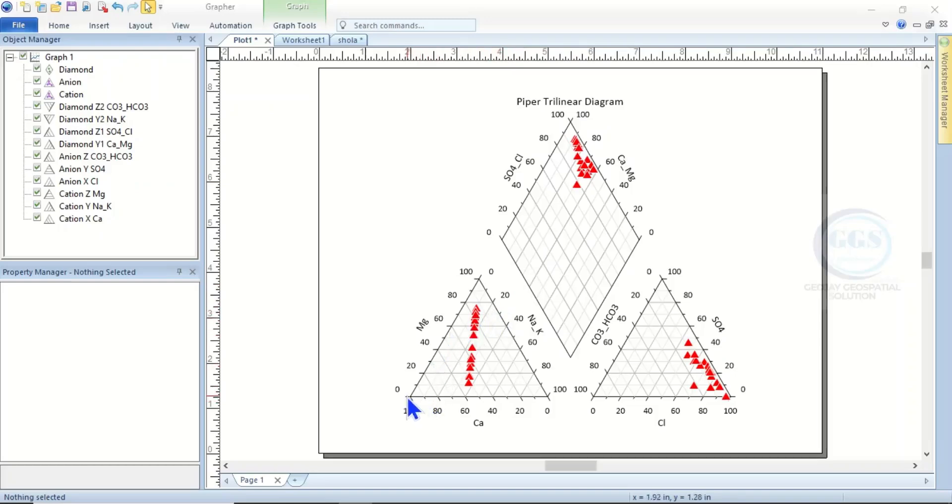you look at the values here, you can see zero at the edges and 100 here. What does that mean? It means this corner is for magnesium. Magnesium is at 100 here and at zero here.